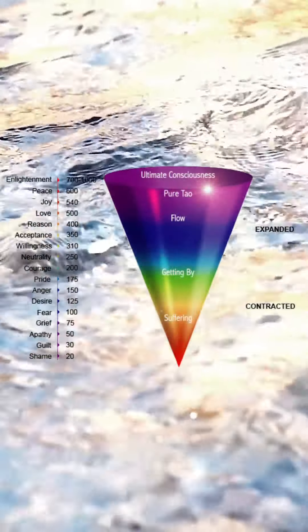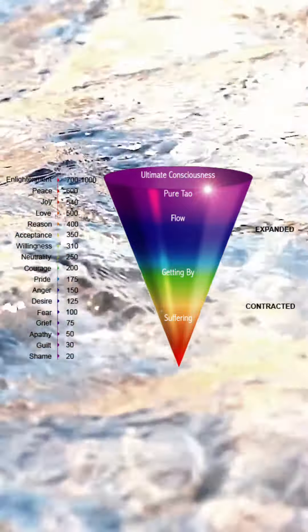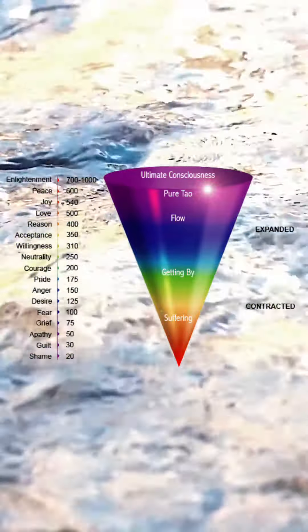For those who aren't familiar with the Hawkins map of consciousness, it's a logarithmic scale from one to infinity, or point zero-zero-zero... many zeros to one, because there has to be some existence to measure.